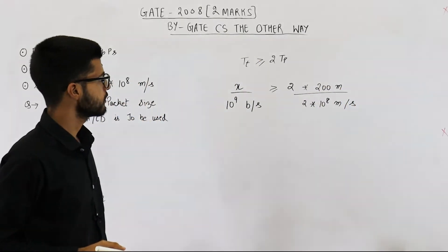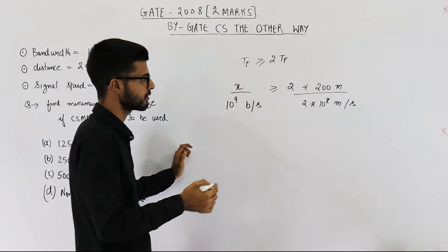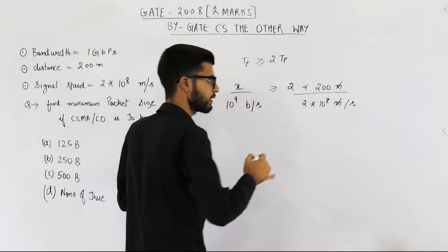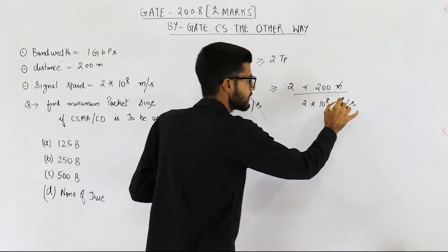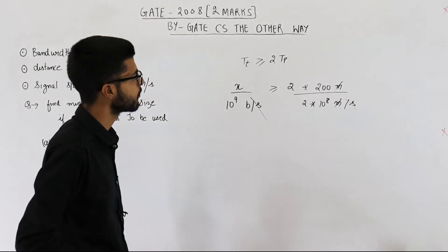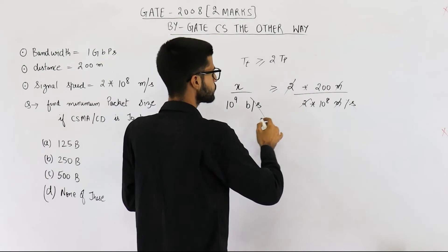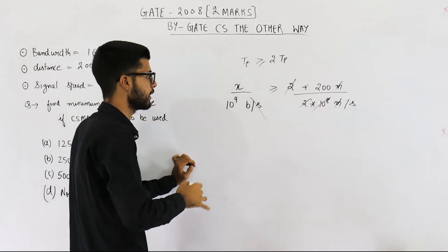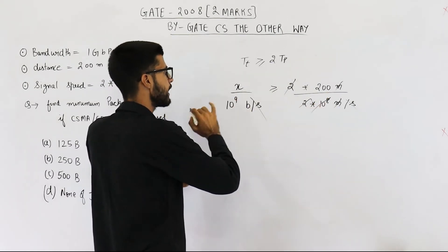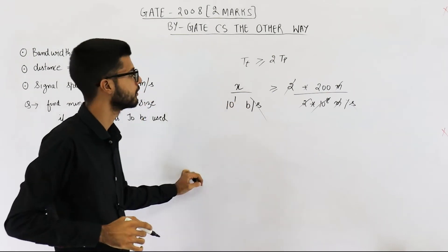So you can see unit of x will be bits because meter and meter will get cancelled, per second and per second will get cancelled and only bits is left. 2 and 2 will get cancelled. 10 raised to the power 8 will get cancelled with 10 raised to the power 8. So you will be left with 10 raised to the power 1.